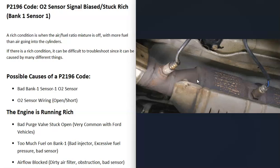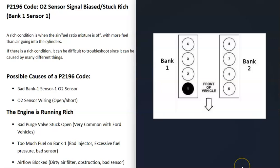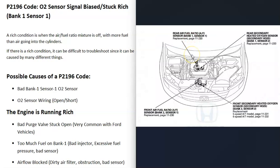If you have a V6 or V8 engine you're going to have two banks. Bank one is always the side of the engine with the number one cylinder, and bank two is the opposite side. If you have a four-cylinder engine it wouldn't matter — you'd only have one bank.